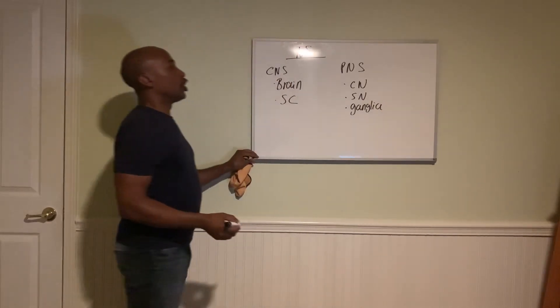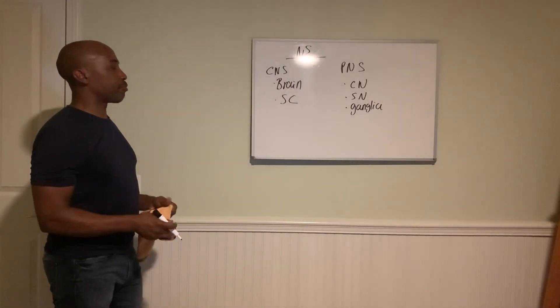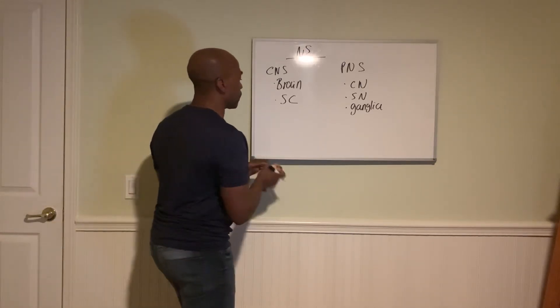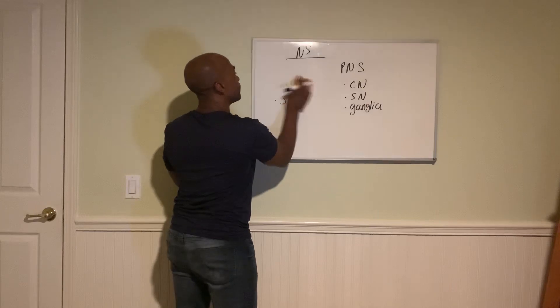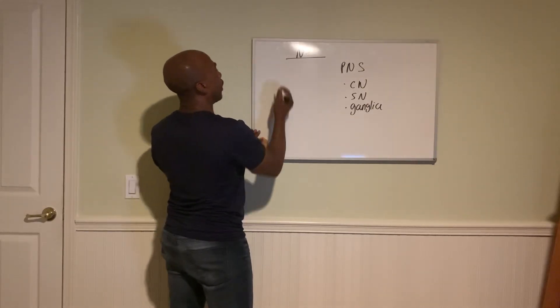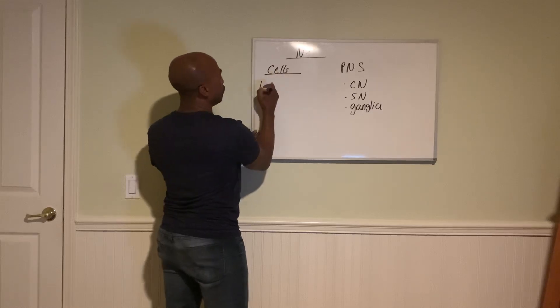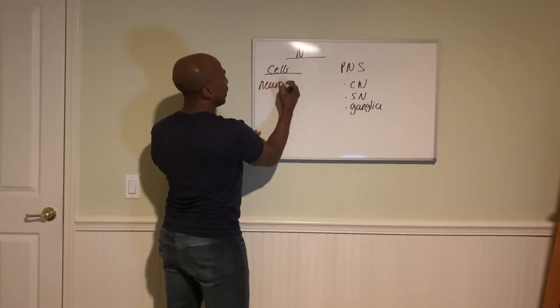Okay, so we're going to first look at the brain and spinal cord, but actually we're going to look at the cells of the nervous system. So the cells of the nervous system are either neurons or glial cells.